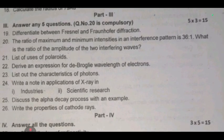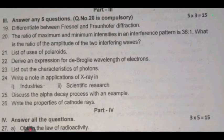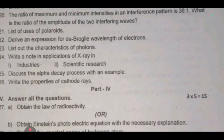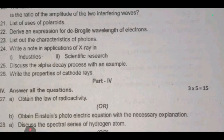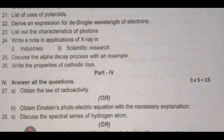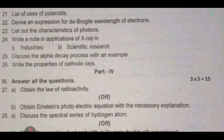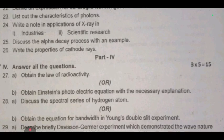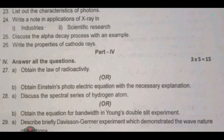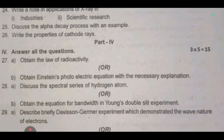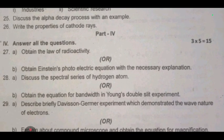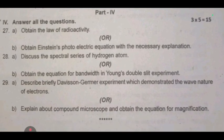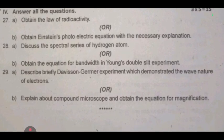Part 4, five mark theory questions. 27, obtain the law of radioactivity or obtain Einstein's photoelectric equation with the necessary explanation. 28, discuss the spectral series of hydrogen atom or obtain the equation for bandwidth in Young's double slit experiment. 29, describe briefly Davison-Germer experiment which demonstrated the wave nature of electrons, or explain about compound microscope and obtain the equation for magnification.